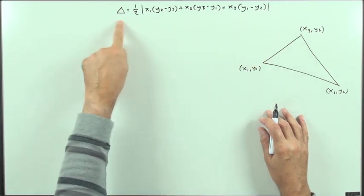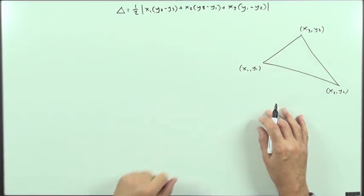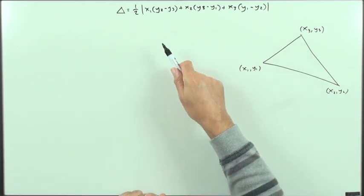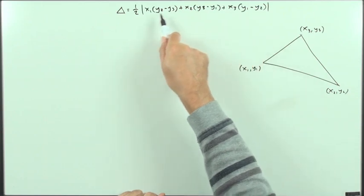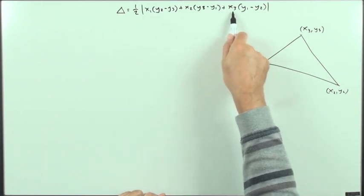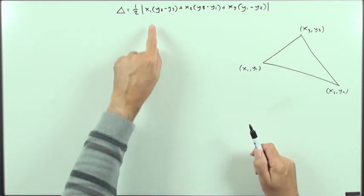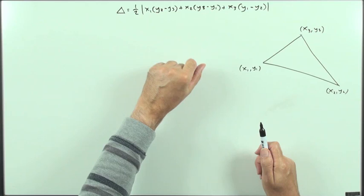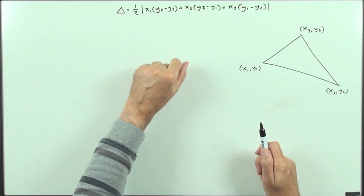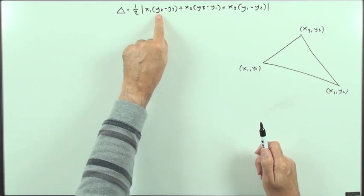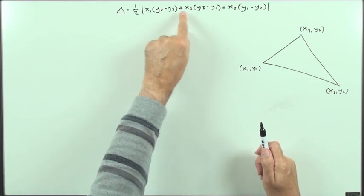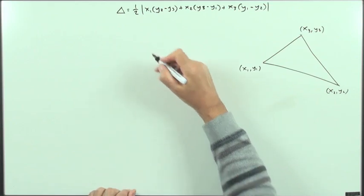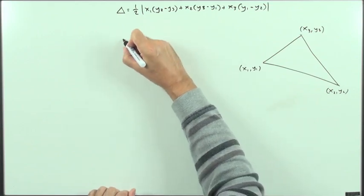A more concise way of writing this out is to express it as a determinant, because the formula looks very much like the determinant of a three-by-three matrix — if only those were products within themselves, that would look exactly like the determinant of a three-by-three matrix.